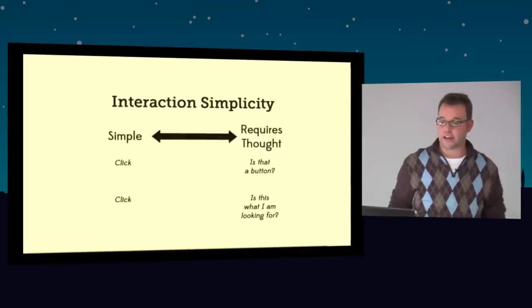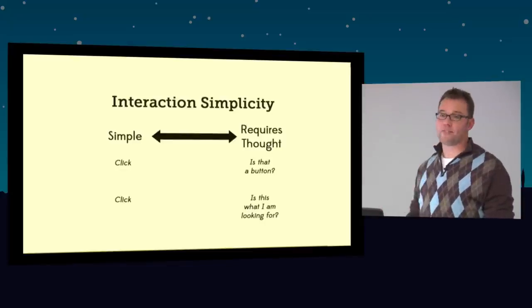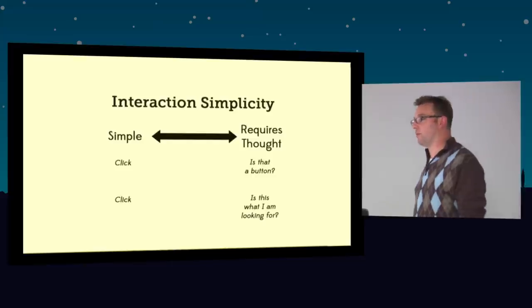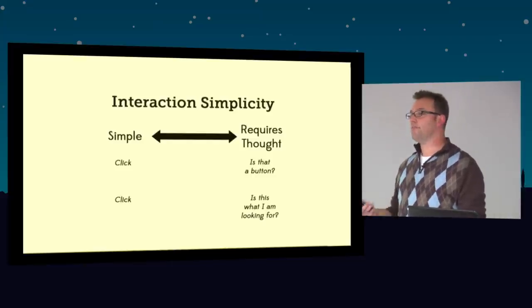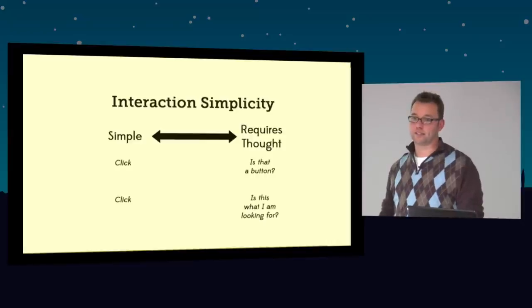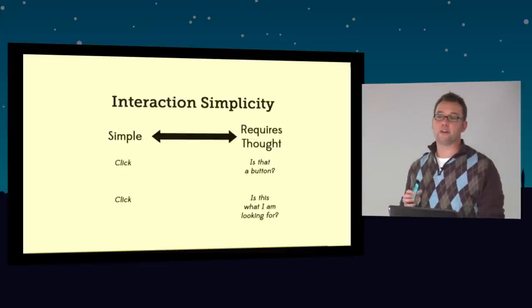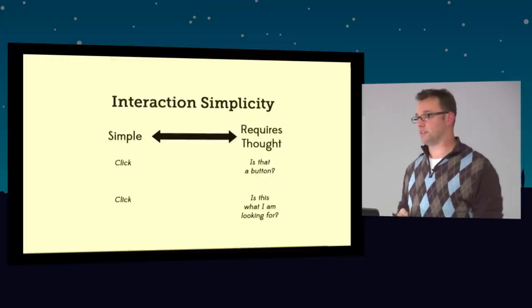Here is what I call the scale of interaction. If it's simple, people will click it. If it requires thought, they'll start thinking, is that a button? There's a law, Hick's law. It says there's an inverse relationship between the number of choices you give a user and the time it takes them to decide. As you reduce their choices, it reduces the amount of time it takes for them to make a decision. There's a breaking point at which point the user will never make a decision. Paralysis by choice.